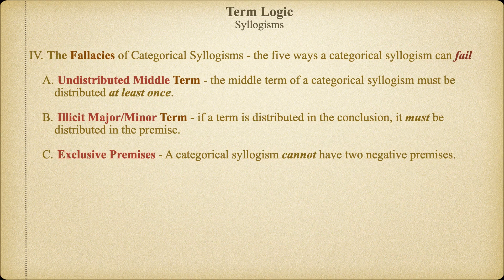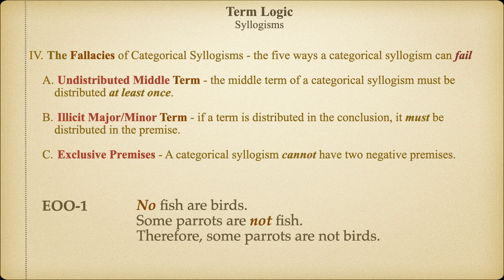The third rule is that a categorical syllogism cannot have two negative premises. There is no valid categorical syllogism which is EE, EO, OE, or OO. Consider this example of an EOO-1 syllogism: No fish are birds. Some parrots are not fish. Therefore, some parrots are not birds. Note that both the major and minor premises are negative. Following the exclusive premises rule, we know this argument is invalid. But let's prove it using a Venn diagram.